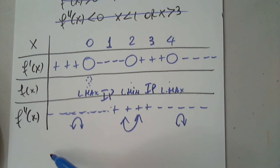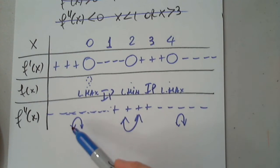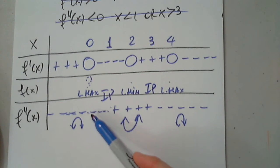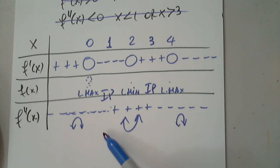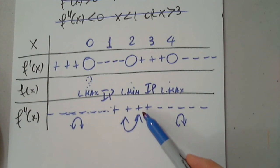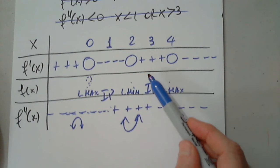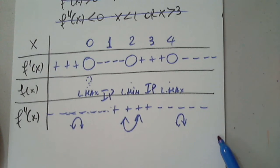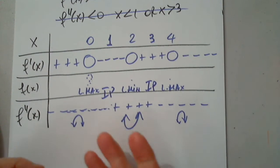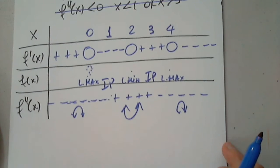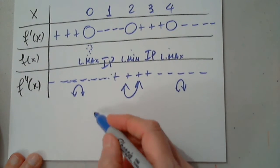The function comes from below, reaches a maximum, then comes down to an inflection point where it changes concavity. At x = 3 you will have a maximum, it changes concavity there, and then it continues to negative infinity. It's very clear what I have to graph.